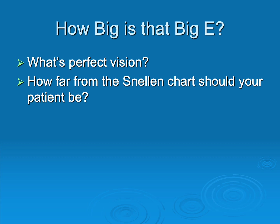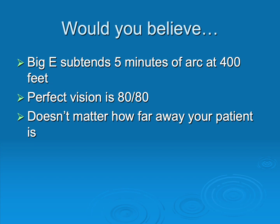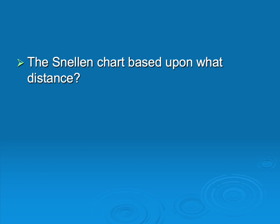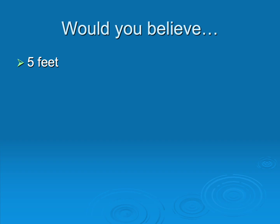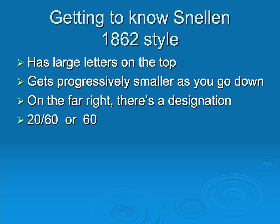Have you ever thought about the Snellen chart — how big that big E is, what perfect vision is, how far from the chart your patient should be, and how to explain vision on the chart to patients? What if I told you the big E subtends five minutes of arc at 400 feet, perfect vision is 400/400, and it really doesn't matter how far away your patient is? The Snellen chart is actually based upon five feet, and it was invented in 1862 and we still use it today.